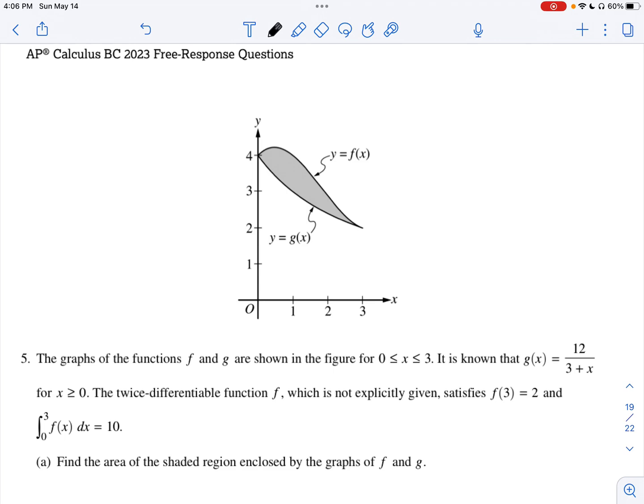It is known that G of X is equal to 12 over 3 + X for any X value greater than or equal to 0. Meanwhile, F is not given. However, we are told that it is a twice differentiable function, and it satisfies F(3) = 2. And we know that the integral of our function F from 0 to 3 is equal to 10.